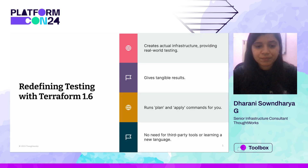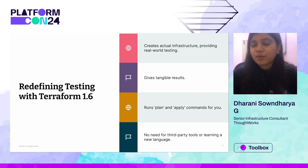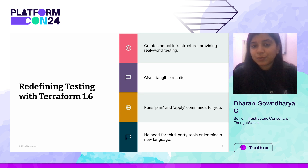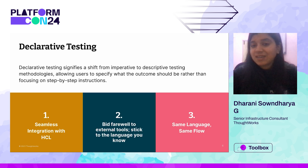Terraform testing in version 1.6 is a game changer. Underneath it creates actual infrastructure, which provides real-world testing. It gives you tangible results — you'll be able to see whether your test cases pass or fail and the reasons for that. It automatically runs the plan and apply commands for you, so you do not have to run terraform plan and terraform apply separately. There is no need for third-party tools for testing.